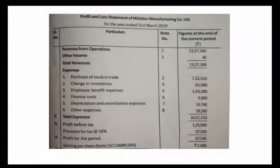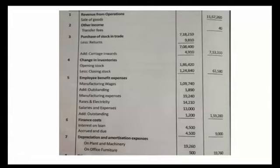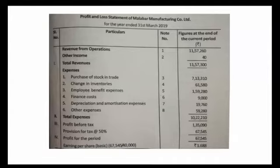Employee benefit expenses — Note No. 5. Manufacturing wages is 1,09,740. Outstanding wages is 1,890. Manufacturing expenses is 19,240. Production value falls under employee benefit expenses. Total employee benefit expenses is 1,59,280.